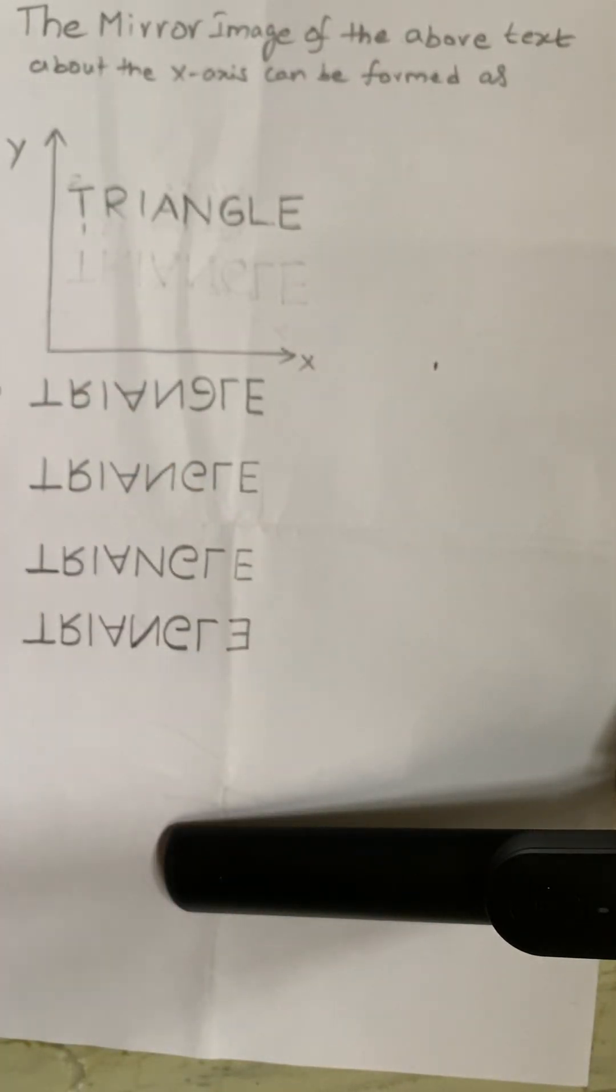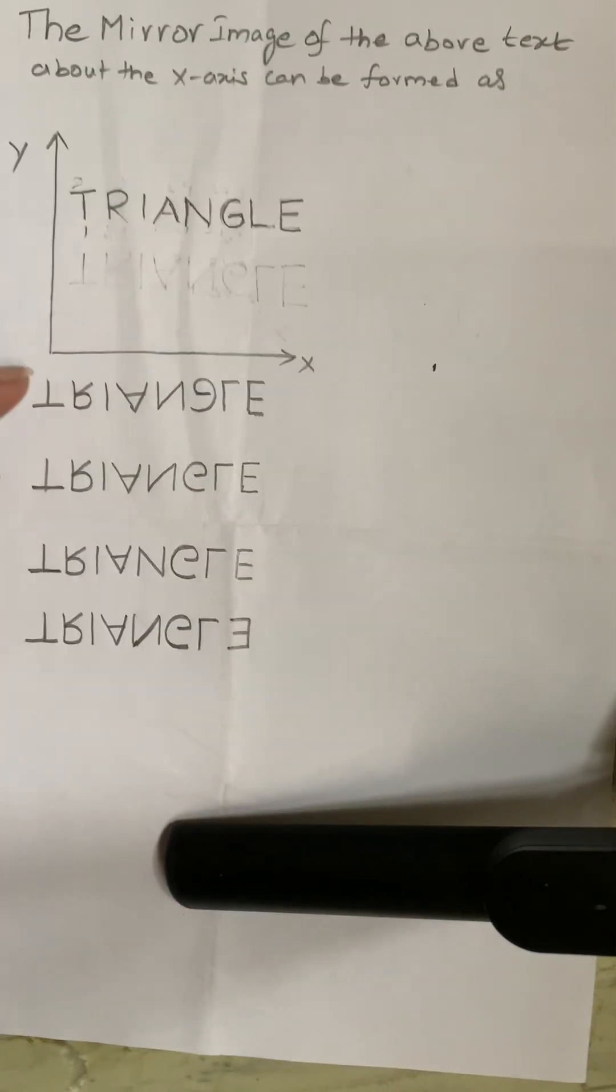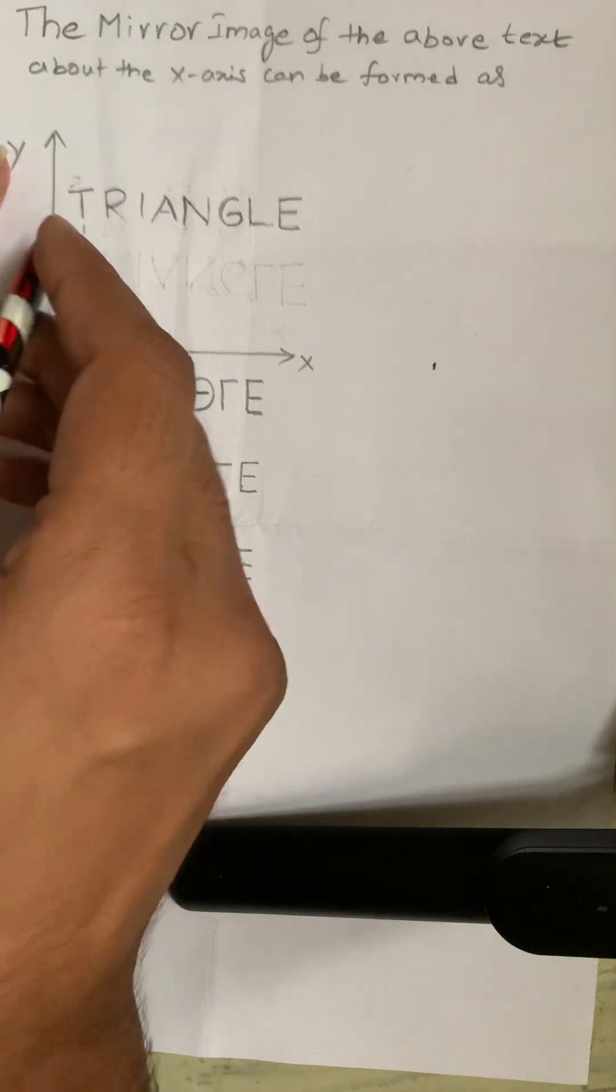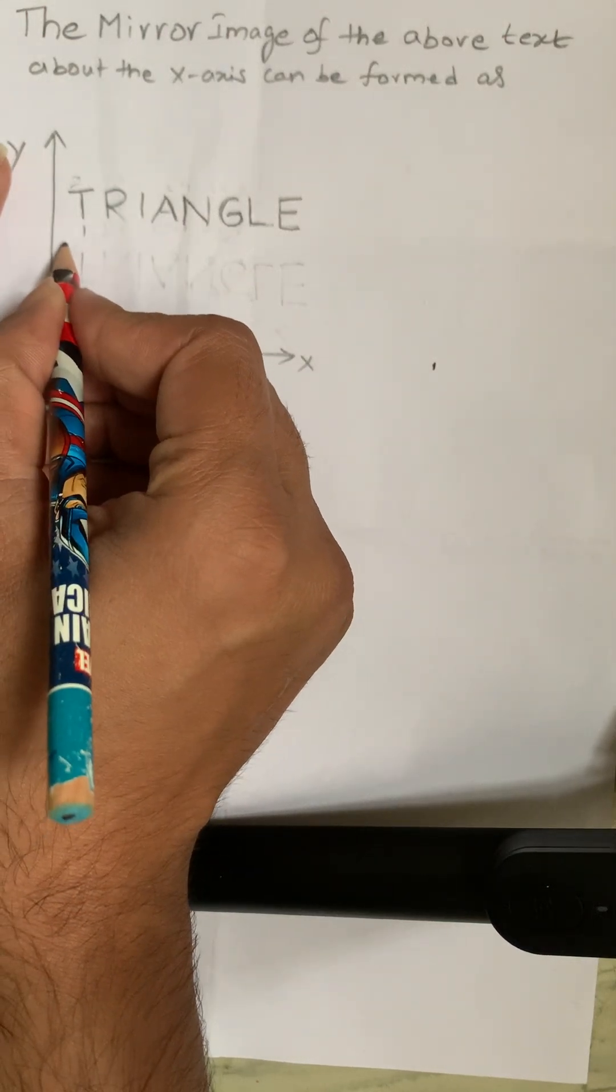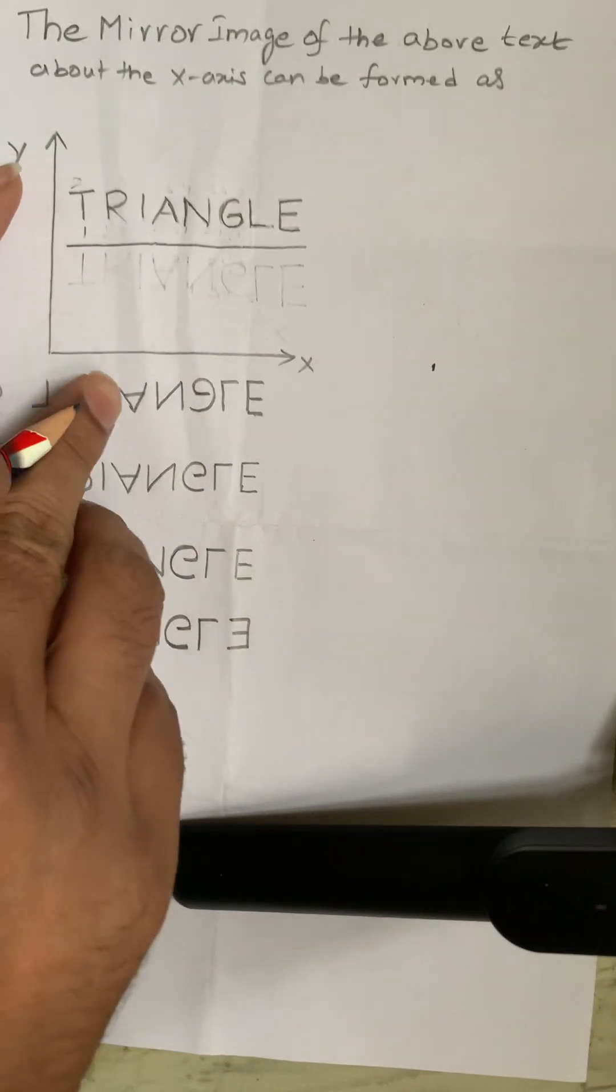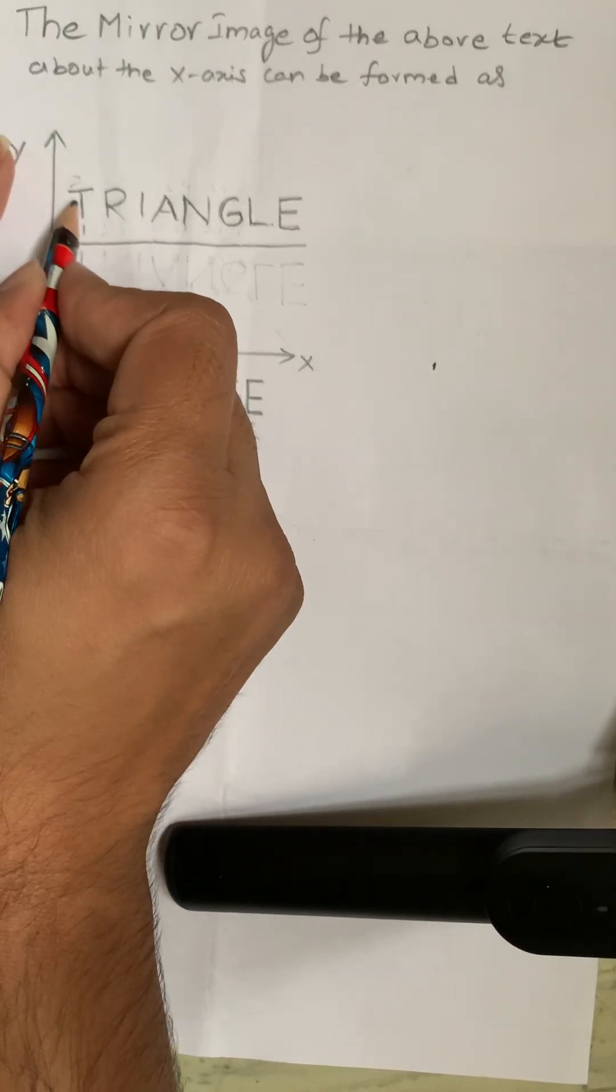Here we have to identify the mirror image of this text in the given options about the x-axis. If you feel difficulty while choosing the mirror image, just plot the numbers about the x-axis. I'll show you.